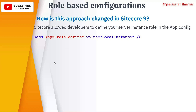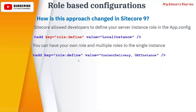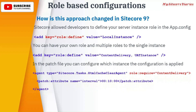You can also assign multiple roles to a single instance. For example, if you want one instance to serve as both CM and processing, or as both content delivery and UAT, you can define it like: 'role:define = ContentDelivery, UAT'. That same instance will then perform both roles simultaneously.